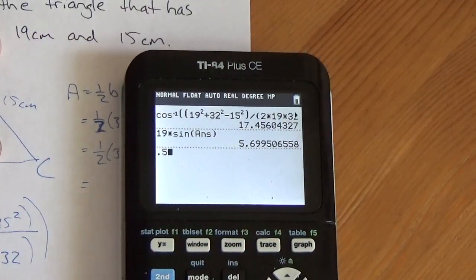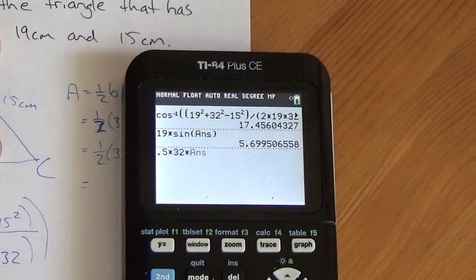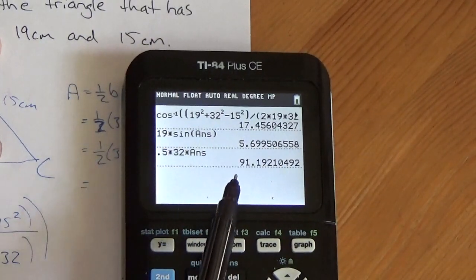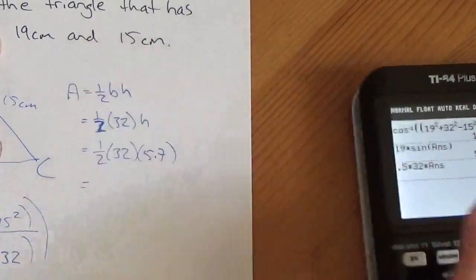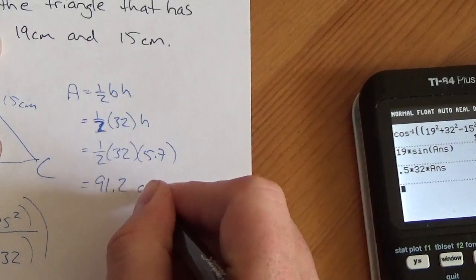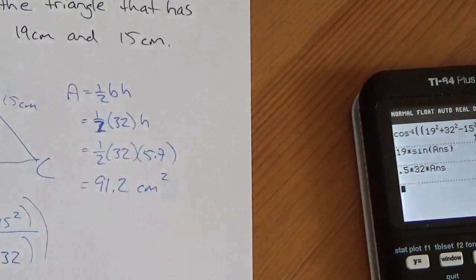So, 0.5, there's my one half, multiplied by 32, multiplied by my answer here, and now, to the nearest tenth, I'm going to get 91.2 centimeters squared. Okay, and there you go.